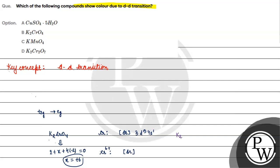If we talk about K₂Cr₂O₇: 2×(+1) + 2X + 7×(−2) = 0, so 2X = 14 − 2, giving X = +6. So in K₂Cr₂O₇ chromium is also +6, and again we don't have d electrons, so d-d transition will not be possible.